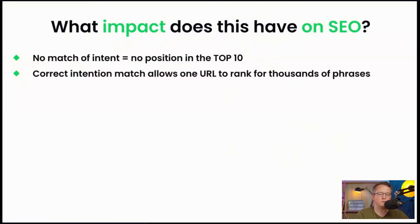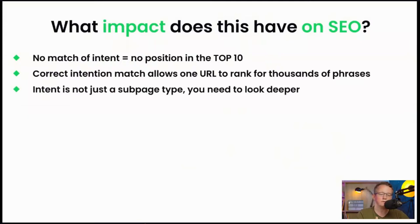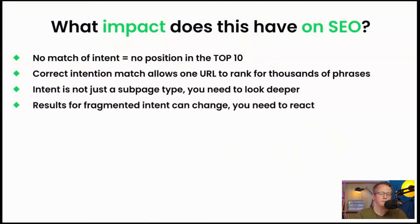Intent is not just a subpage type — you need to look deeper. It doesn't mean if you're trying to rank for 'bike' that you just have to provide a category page. You also need to provide additional information the user expects, like tables, prices, and other things Google can check. Results from fragmented intention can change, so you need to react and also change your content and webpage accordingly.